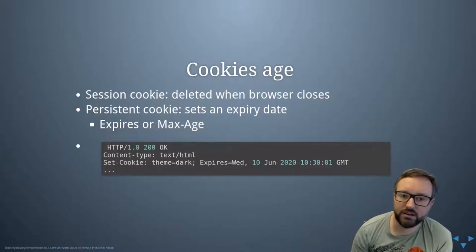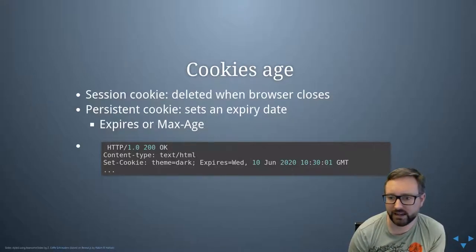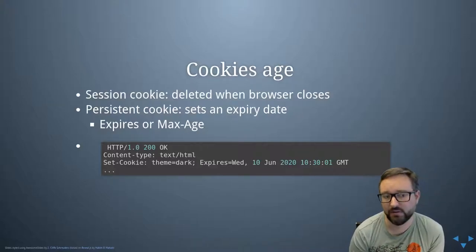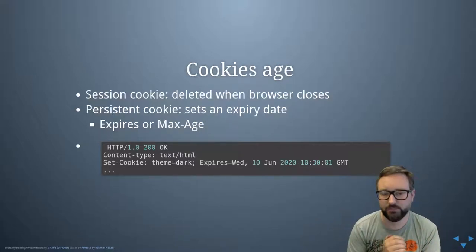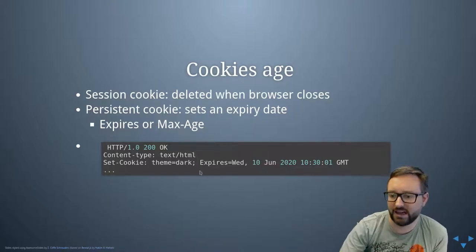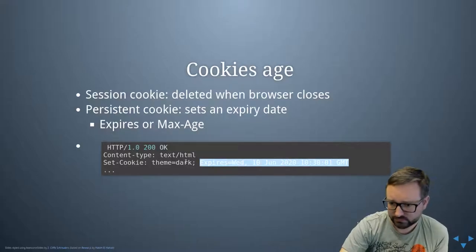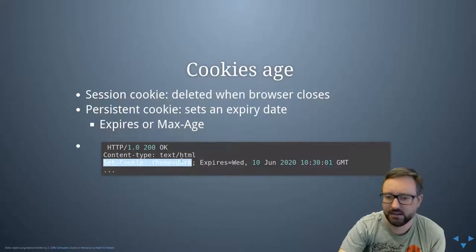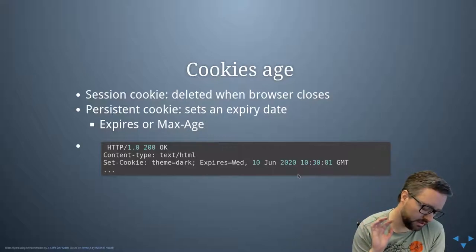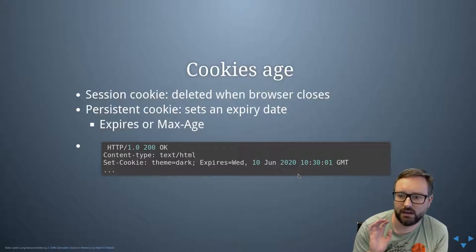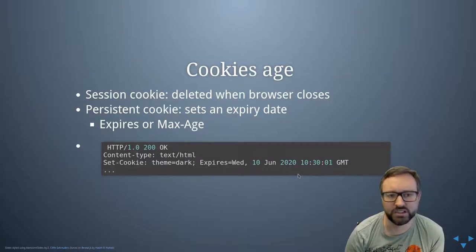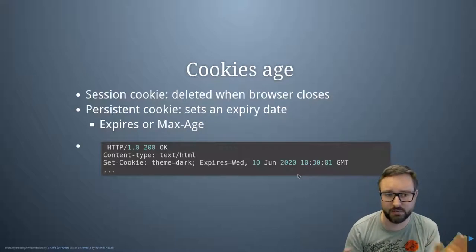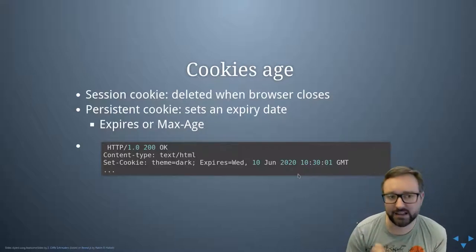When you set a cookie, you can also set an expiry date. If you set a date, then even after you close and reopen the web browser, the cookie will continue to live on until that date is reached. If you don't set an expiry date, it's a temporary session cookie — it will disappear the next time you close your web browser and won't be there when you open it again. But if you do set an expiry date, it's a persistent cookie and it will stay.